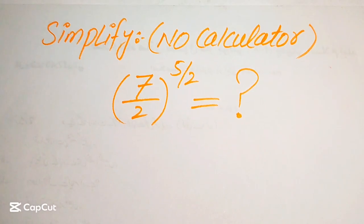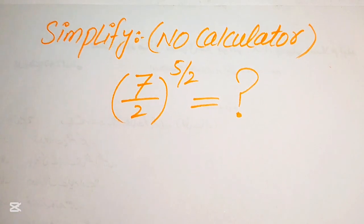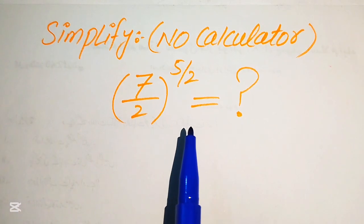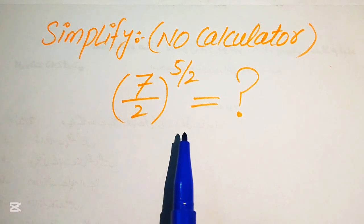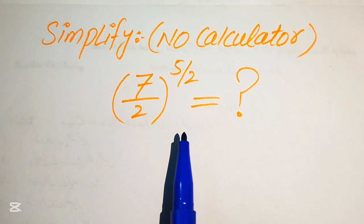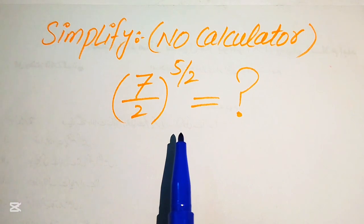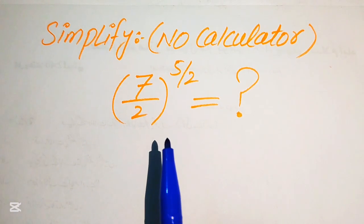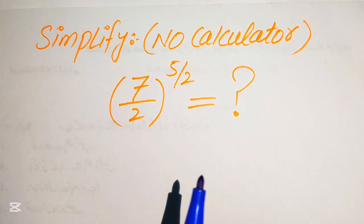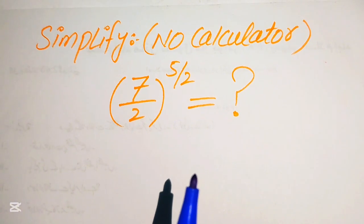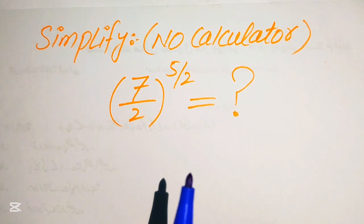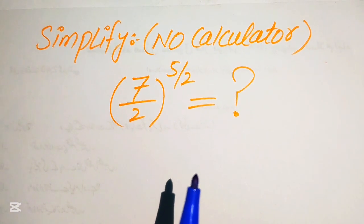How to simplify this algebraic expression: 7 over 2 to the power of 5 over 2. We can simplify this into the lowest form. Remember, a calculator is not allowed in this problem, so we will do all of the working on paper. If you have any other method in mind, please write it in the comment section.